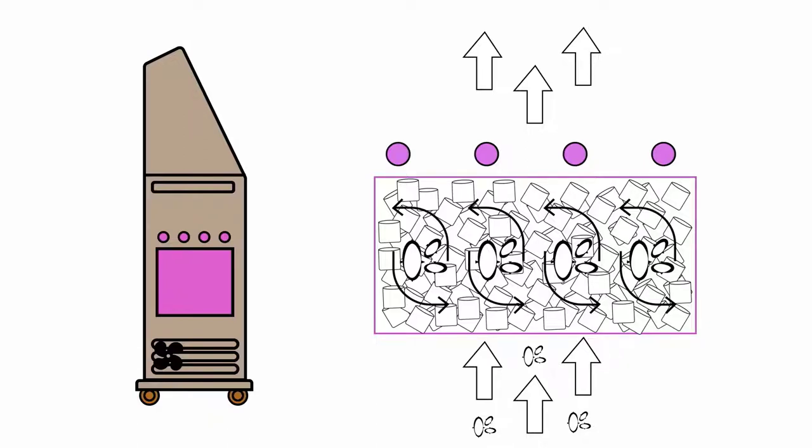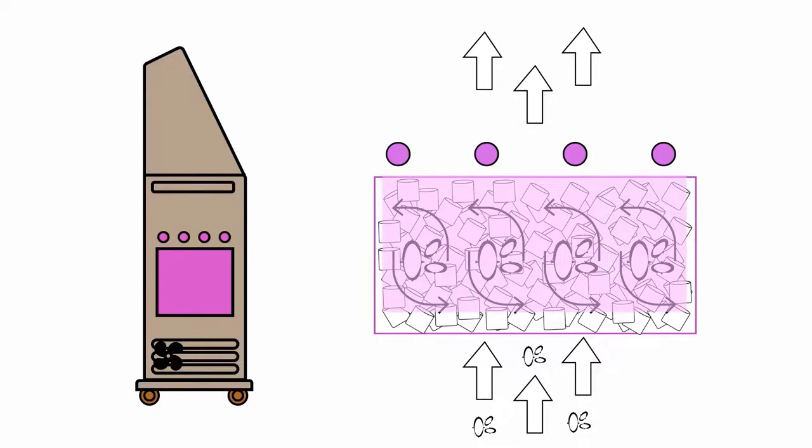While the microbes are trying to find their way out of the maze, they're being hit with ultraviolet light. The quartz matrix lets ultraviolet light and air pass through, but doesn't allow microbes to pass through.